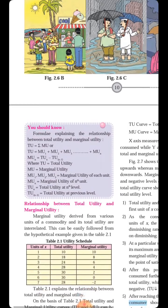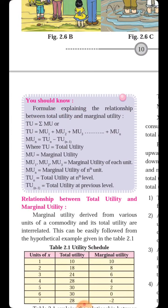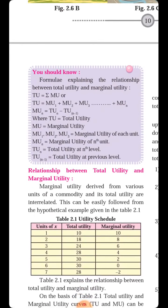There is a 'you should know' portion here where the concepts of Total Utility and Marginal Utility are explained with formulas — very important from an exam point of view, as questions can be asked on these. The formula explaining the relationship between Total Utility and Marginal Utility is: TU = Σ MU. That is, the summation of all marginal utilities gives us the Total Utility. Expanded: TU = MU1 + MU2 + MU3 + ... + MUn. Adding all marginal utilities gives the value of Total Utility.